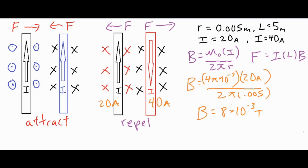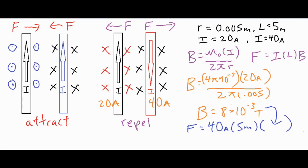Now we use our second formula to figure out the force. F = ILB, where it is the 40-amp wire at a length of 5 meters experiencing the magnetic field of 8 × 10⁻³ teslas. The force comes out to 0.16 newtons.